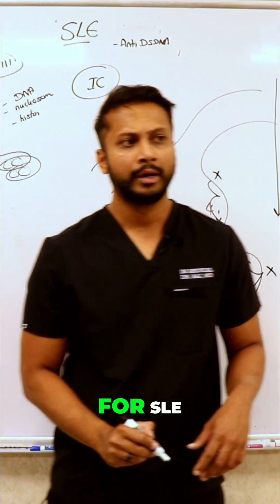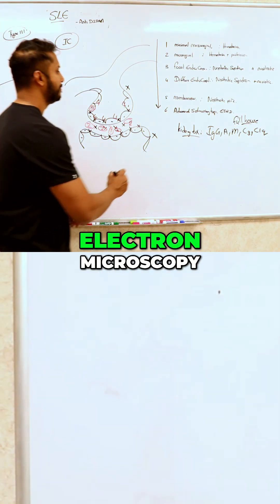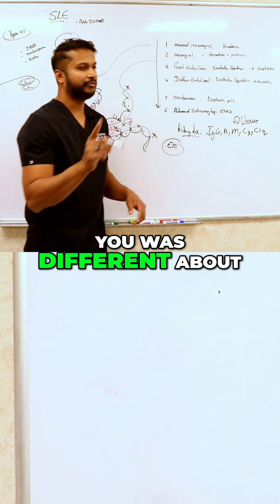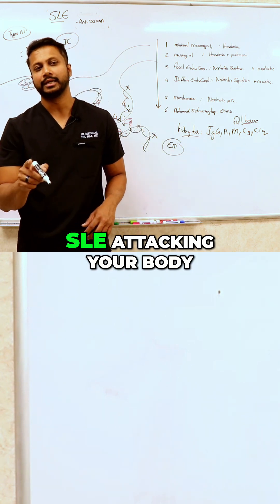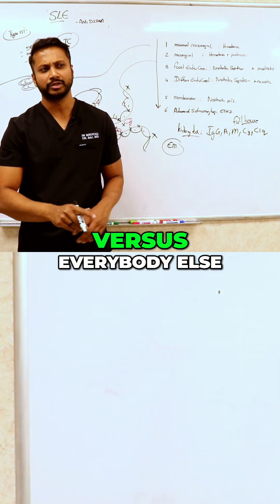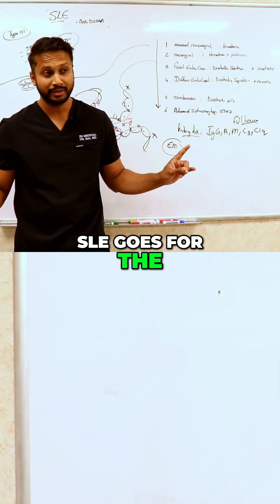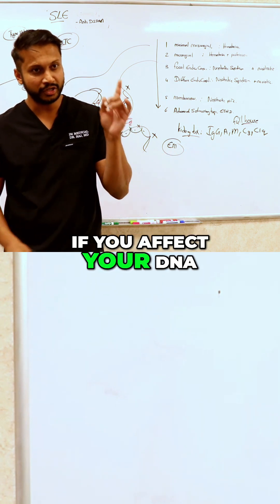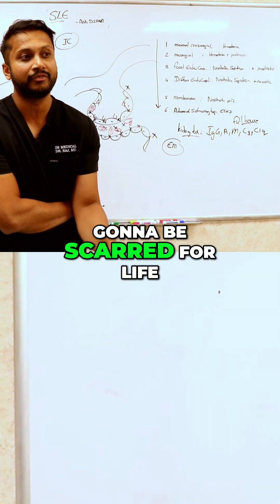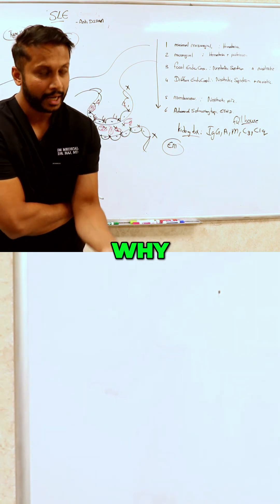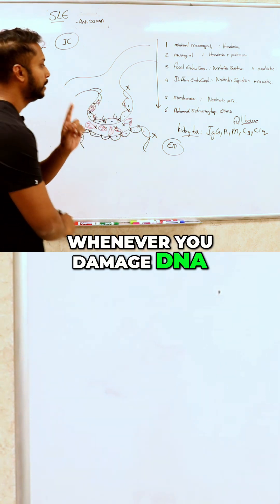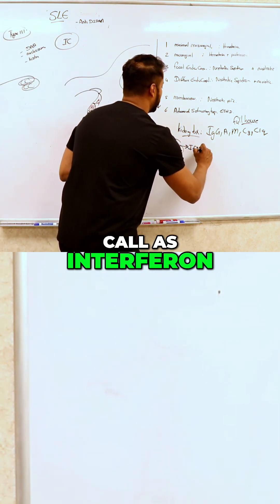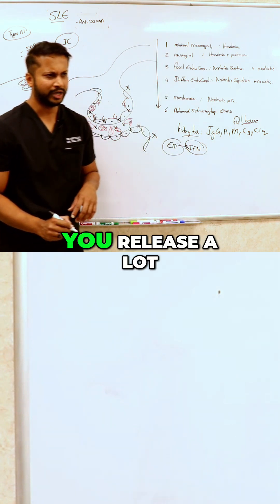If you look under electron microscopy, what is different about SLE attacking your body versus everyone else? SLE goes for the DNA. If you affect your DNA, you're scarred for life — because whenever you damage DNA, you release something called interferon.